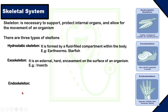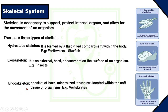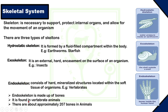Endoskeleton. Endo means internal. It is the skeleton which is found inside the body of an animal. Endoskeleton consists of bones — it consists of hard mineralized structures located within the soft tissues of an organism. Endoskeleton is found in vertebrate animals such as livestock.